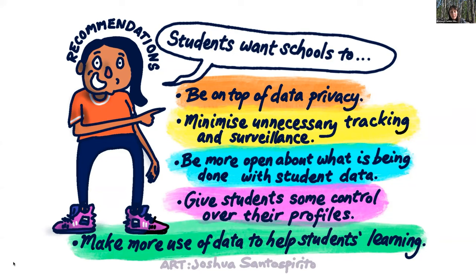As a first recommendation, schools need to be more on top of data privacy by better understanding where the school's data is stored, who owns it, how it's being used and for what purpose, and whether it can be easily retrieved. The second recommendation is to minimize unnecessary tracking and surveillance. Data analytic platforms have become an increasingly pervasive component of schools, and our research found that they're not necessarily a constructive addition to the classroom. Students who are tracked don't feel the school trusts them, which compromises their experience and desire to learn. Surveillance data is also of questionable accuracy and is often decontextualized.